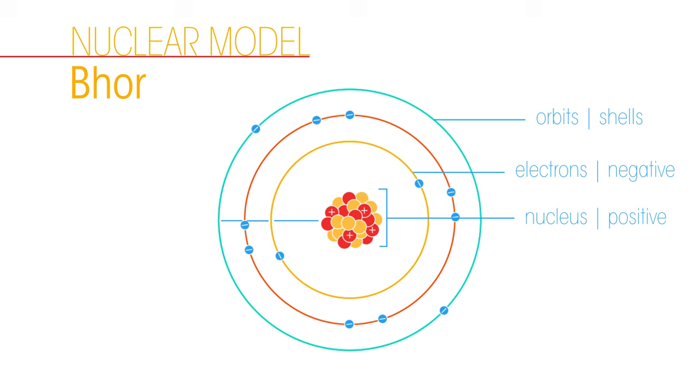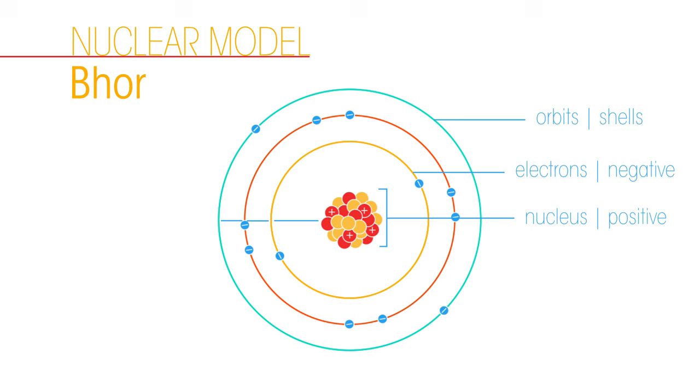So that's our current understanding of the atom. There is a positively charged nucleus with negatively charged electrons orbiting around it in specific shells.